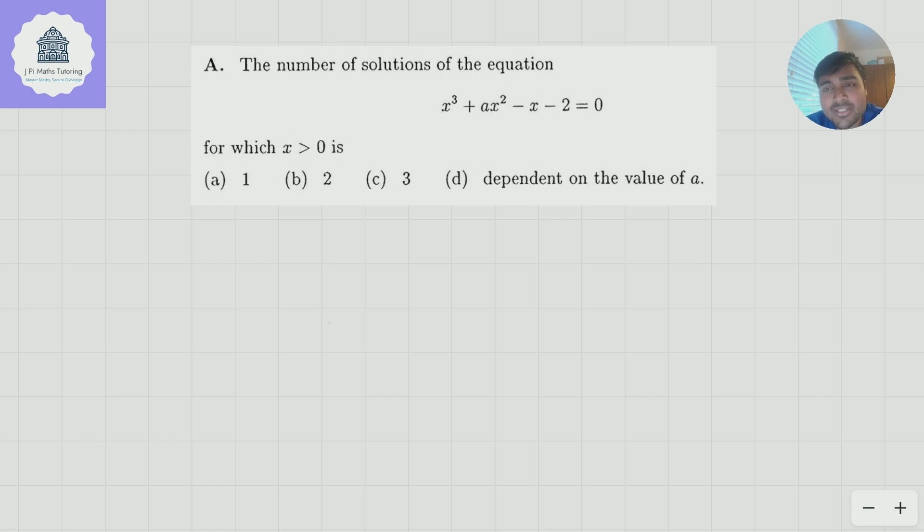So we want to know the number of solutions of the equation x³ + ax² - x - 2 = 0, where x is positive. Is it 1, 2, 3, or is it dependent on the value of a? A really cool problem, because there's a lot of different ways you can approach this. Pause the video now and give it a go for yourself.